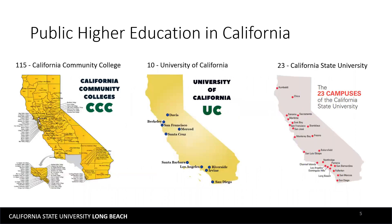Here in California, we have three public higher education systems. We have 115 campuses in the California Community College System, or the CCCs. We have 10 University of California, or UC, campuses which serve as research institutions. And lastly, the third sector is the California State University System, also called the CSUs.